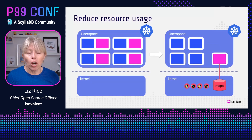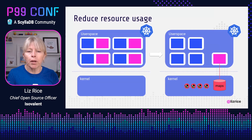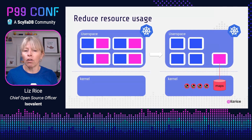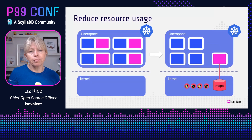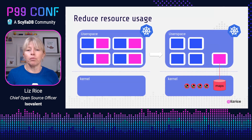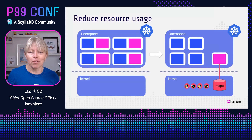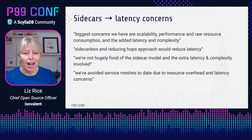Taking Cilium as an example, we would have a user space agent running on every node, which manages and coordinates the eBPF programs. Removing the duplicate copies of information can have a significant effect on the resources required.